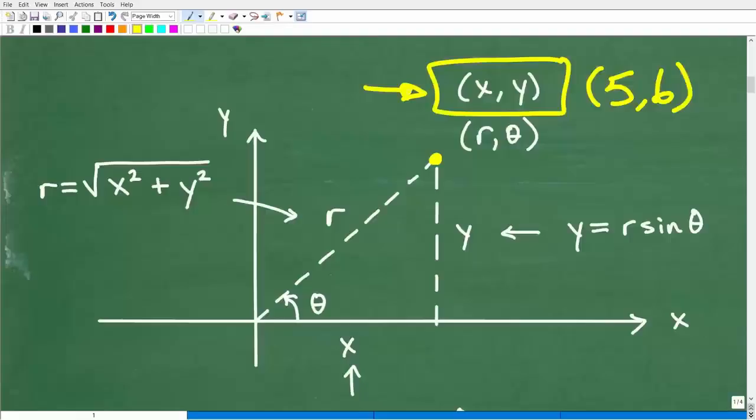But when you get into trigonometry, we have a completely different way to describe the location of a point and that's called polar coordinates. All right. So here is an example of this point, but we can define it this way. Okay. R theta.